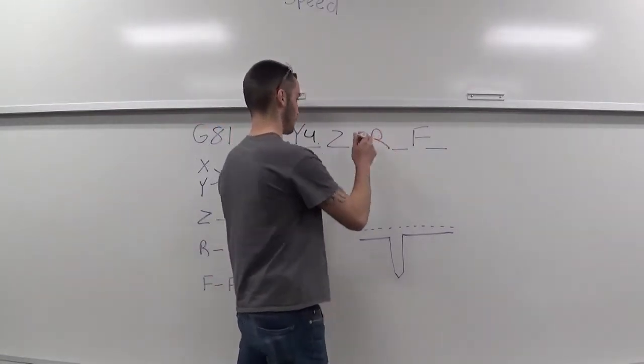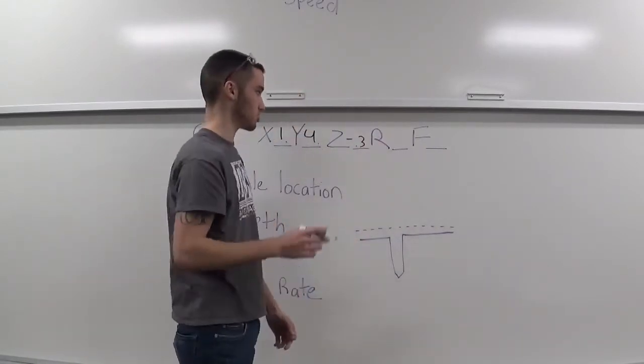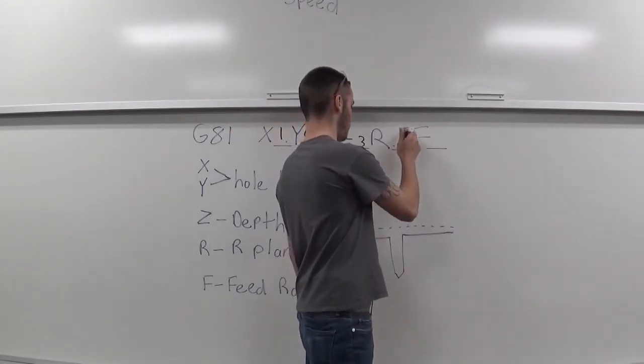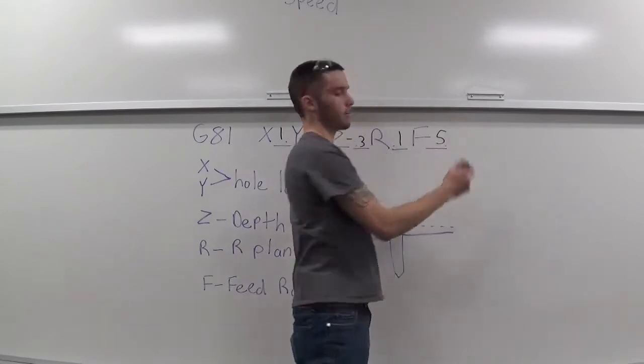So, we'll just go like, it's going to be, let's say, 300 thou deep, just a shallow hole. And our R-plane, 0.1, and we'll move at a feed rate of 5 inches per minute.